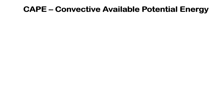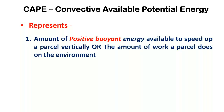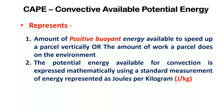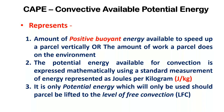Convective available potential energy is represented as: First, the amount of positive buoyant energy available to accelerate a parcel vertically, or the amount of work a parcel does on the environment. Second, the potential energy available for convection is expressed mathematically using a standard measurement of energy represented as joules per kilogram. Third, it is only potential energy which will only be used should a parcel be lifted to the level of free convection, that is, LFC.